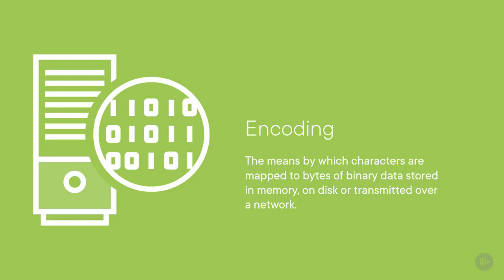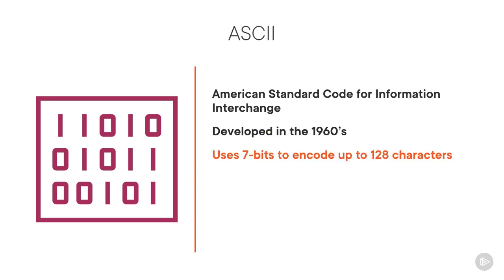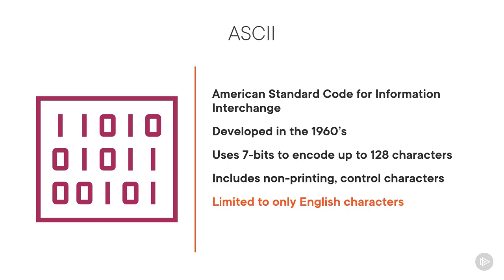Throughout the history of computing, several common encoding standards have been developed which remain in use today. An early encoding format you may be familiar with is the American Standard Code for Information Interchange, or ASCII for short. Initially developed in 1960, this is an early encoding standard with its origins based on the encoding used to send messages via telegraph. ASCII encoding uses 7 bits to encode 128 characters from the English alphabet, including lowercase and uppercase letters, punctuation and digits. It includes additional non-printing control characters such as tab and carriage return. One of the significant limitations of ASCII is that its 7-bit design means it cannot represent non-English characters. ASCII is still in use today, and it's specified as the encoding for the HTTP 1 request line and headers.